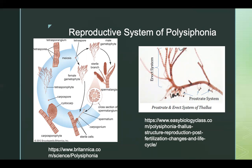Male reproductive organs on a Polysiphonia are called spermatangia, and female reproductive organs are called the carpogonium. The spermatangia are produced on fertile branches and changed into spermatium, which are non-motile cells. The spermatangia wall ruptures and sends the spermatium downstream to the carpogonia. The carpogonia are also produced by short female fertile branches; the pericentral cells are produced by the basal cells and produce a carpogonial initial.